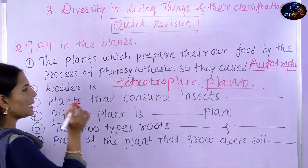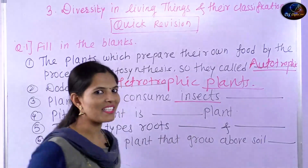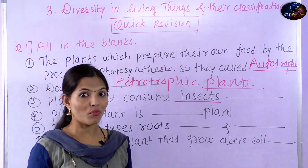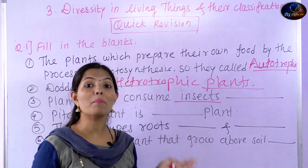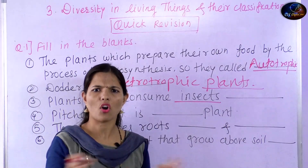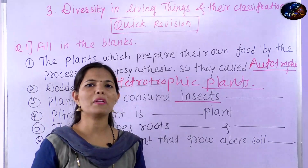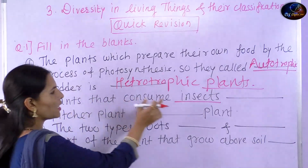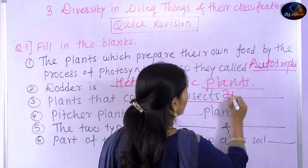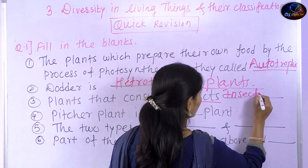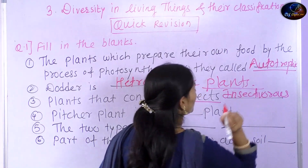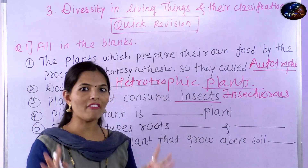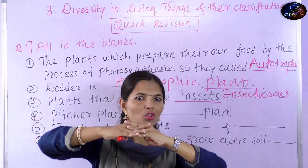Next, plants that consume insects. What do we call them? We call them pitcher plant, Venus fly trap, Drosera. Plants that consume insects are called insectivores. You can come to learn about insectivores — pitcher plant, Venus fly trap, Drosera are all insectivorous plants.